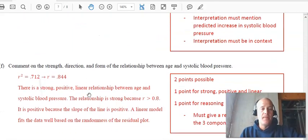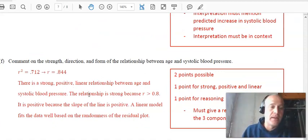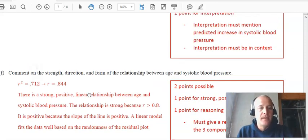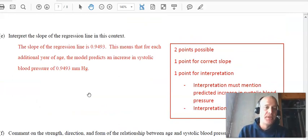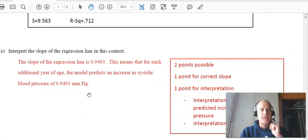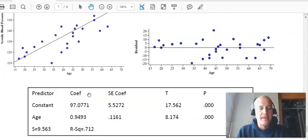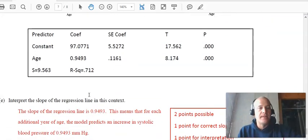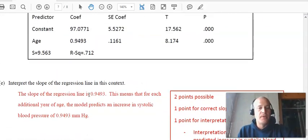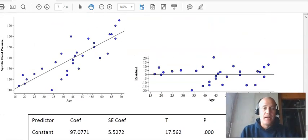So it says comment on the strength, direction, form. So notice they're finding the correlation coefficient when talking about the strength 0.85. There's a strong positive linear relationship, strong because R is more than 80%. It's positive because the slope of the line is positive and the linear model fits the data. Now in the previous question, interpret the slope. We're going to grab that number from the chart. The slope of the regression line is 0.9493. This means that for each additional year of age, the model predicts an increase in systolic blood pressure of 0.943. So we're interpreting as a change of Y over change of X. So as age increases by one, blood pressure increases by almost one as well.